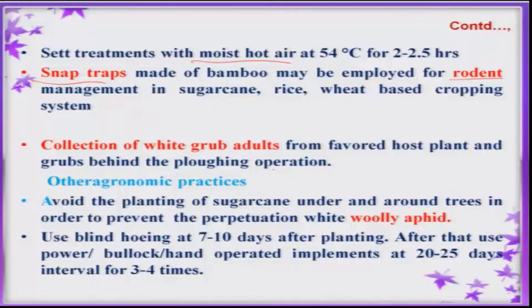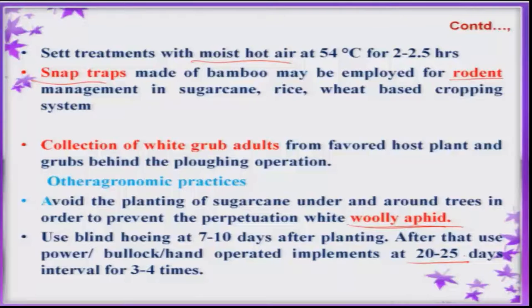There are some agronomic practices that can be followed for the management of woolly aphid. Wherever woolly aphid population is high, try to avoid planting sugarcane under or surrounding trees, as trees act as a source for woolly aphid. Inter-cultivation is also an important practice to be followed in the sugarcane ecosystem to bring down many insect pests.